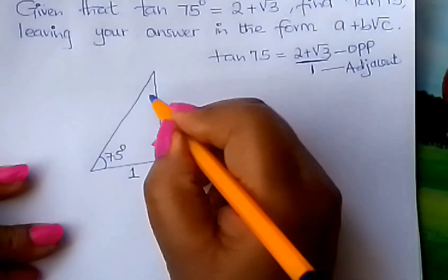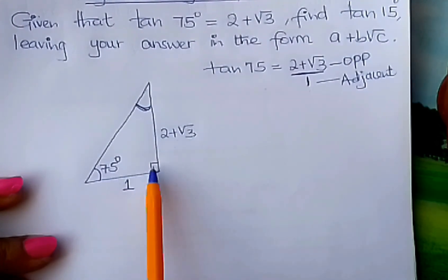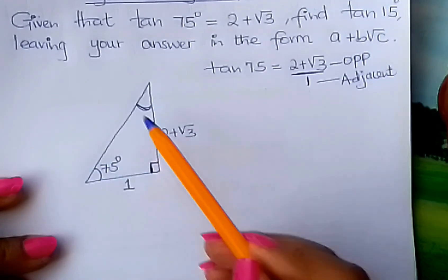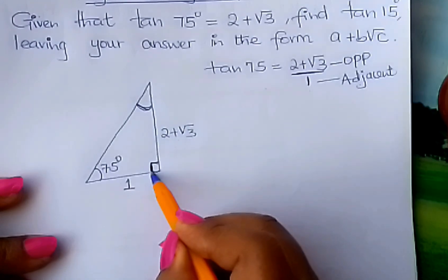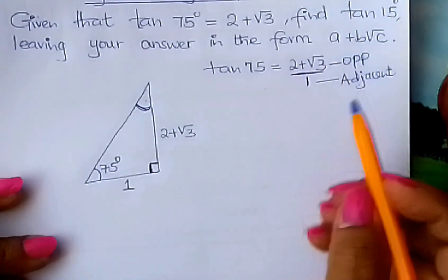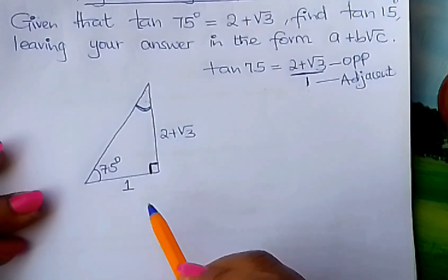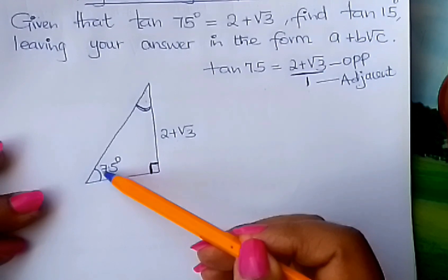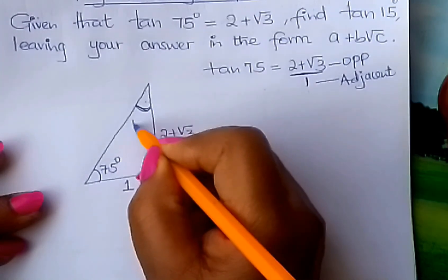From there, you ask yourself, what is this other acute angle here? In a right angle triangle, this angle is normally 90 degrees. And we know that in any triangle, interior angles add up to 180 degrees. So if this is 90 already, these two acute angles add up to 90. And therefore, if this is 75°, this is 90 minus 75, which gives you 15°.